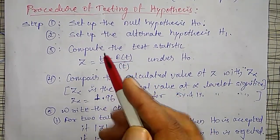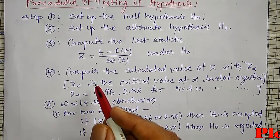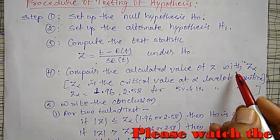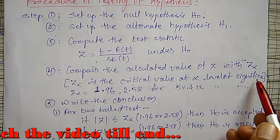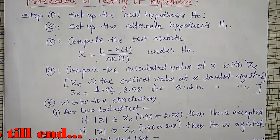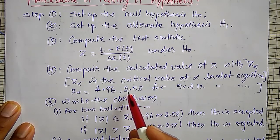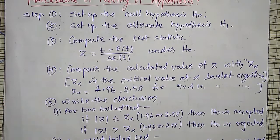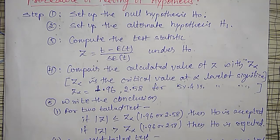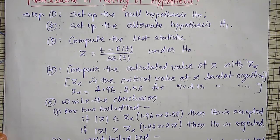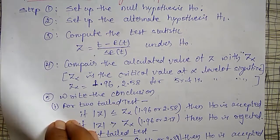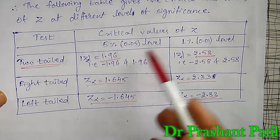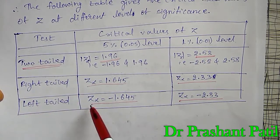Then compute the test statistic under H₀, and compare the calculated value of Z with Z-alpha, which is the critical value at a given level of significance. Z-alpha is 1.96 for 5% level, 2.58 for 1% level, 1.64 for the right tail test, and −1.64 for the left tail test.